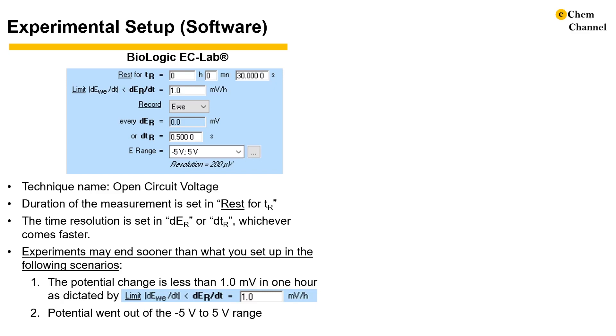It has occurred to me that OCP measurement can be shorter than what I set up in the software. Most frequently, it occurs due to the default limit of a potential change of one millivolt per hour being reached after the system reaches equilibrium.